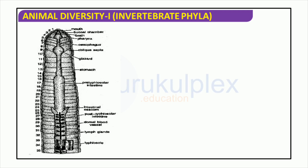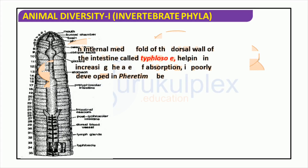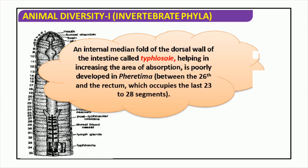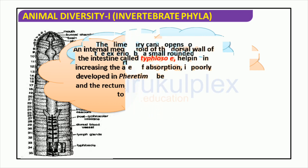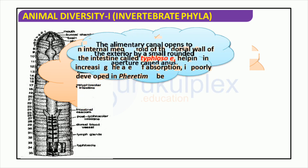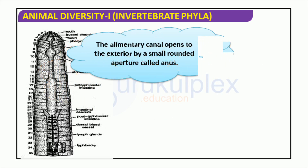The ingestion of soil rich in organic matter marks the beginning of the digestion process for Ferritima. The digestive tract of this invertebrate phylum is complex, featuring a typhlozole — an internal median fold of the dorsal wall of the intestine that enhances the area of absorption. Further digestion takes place via digestive enzymes that simplify and break down the ingested material, with the resulting nutrients being absorbed through the intestinal walls to fuel metabolic activities.